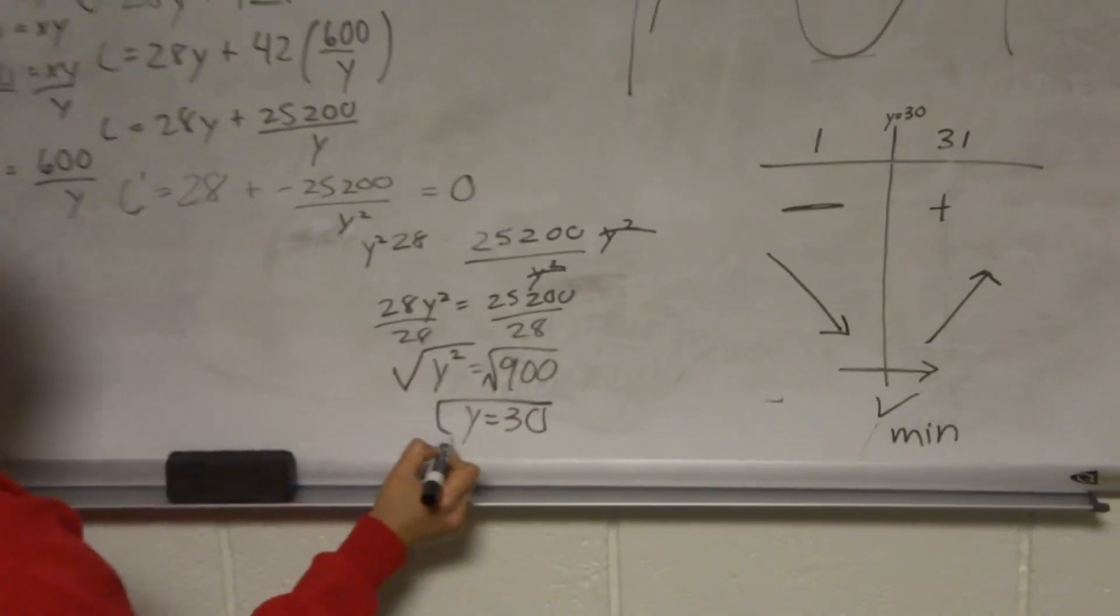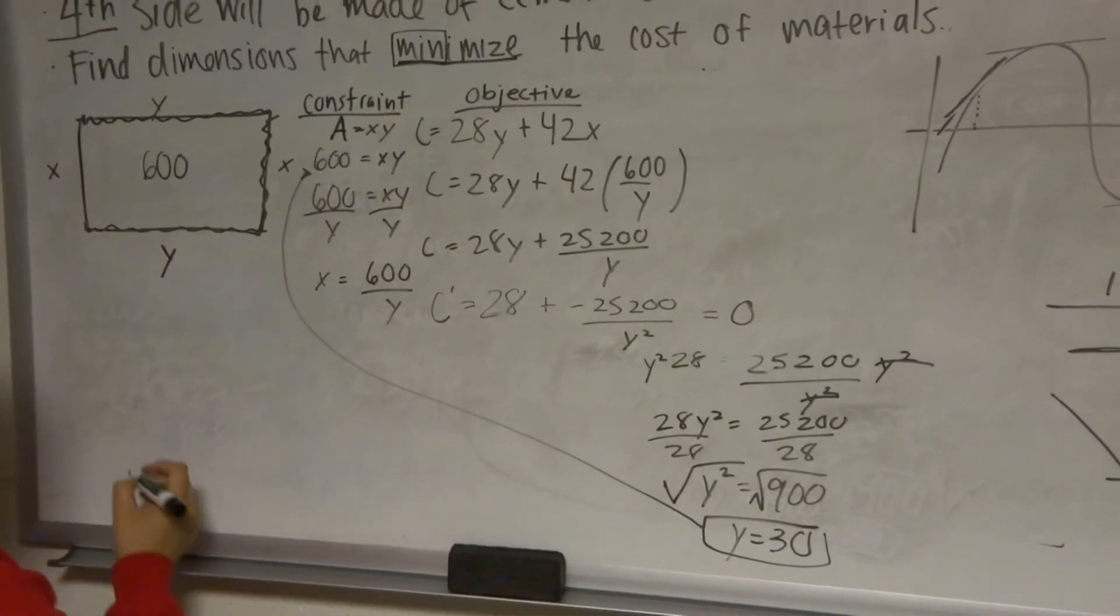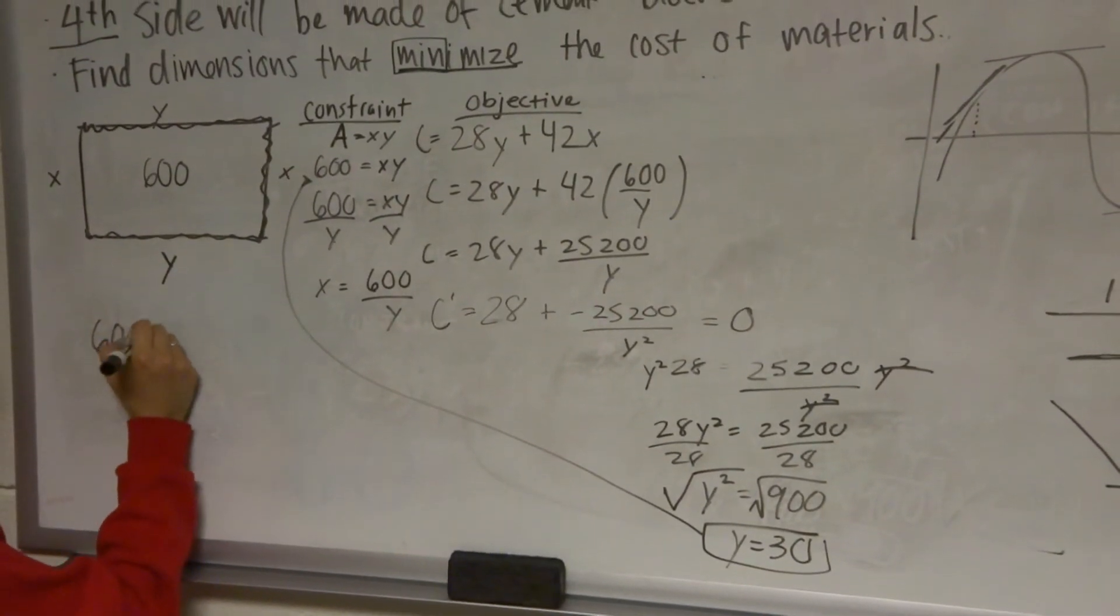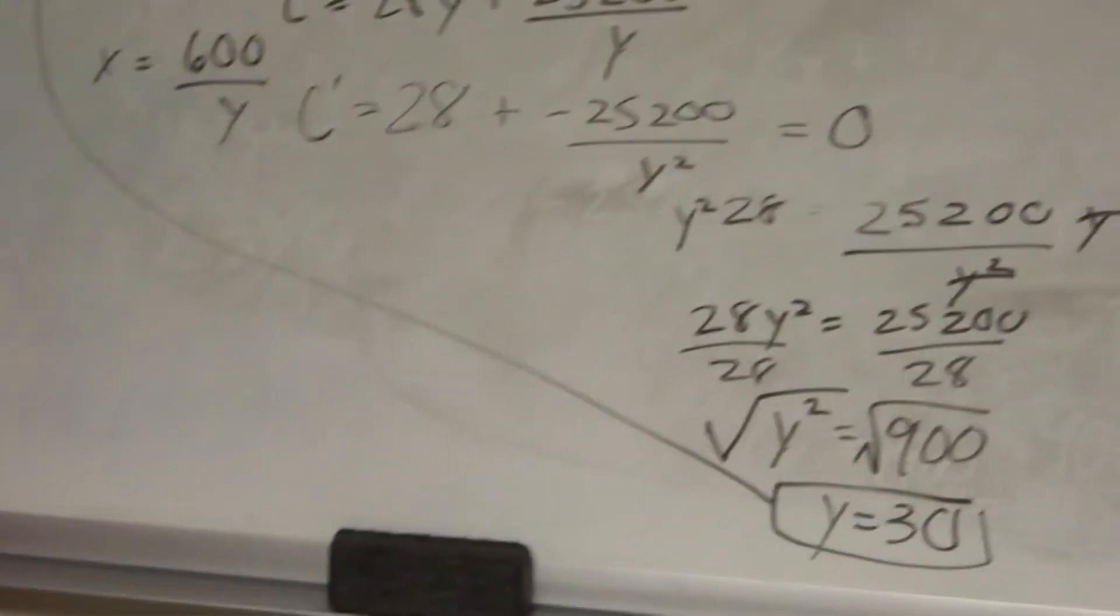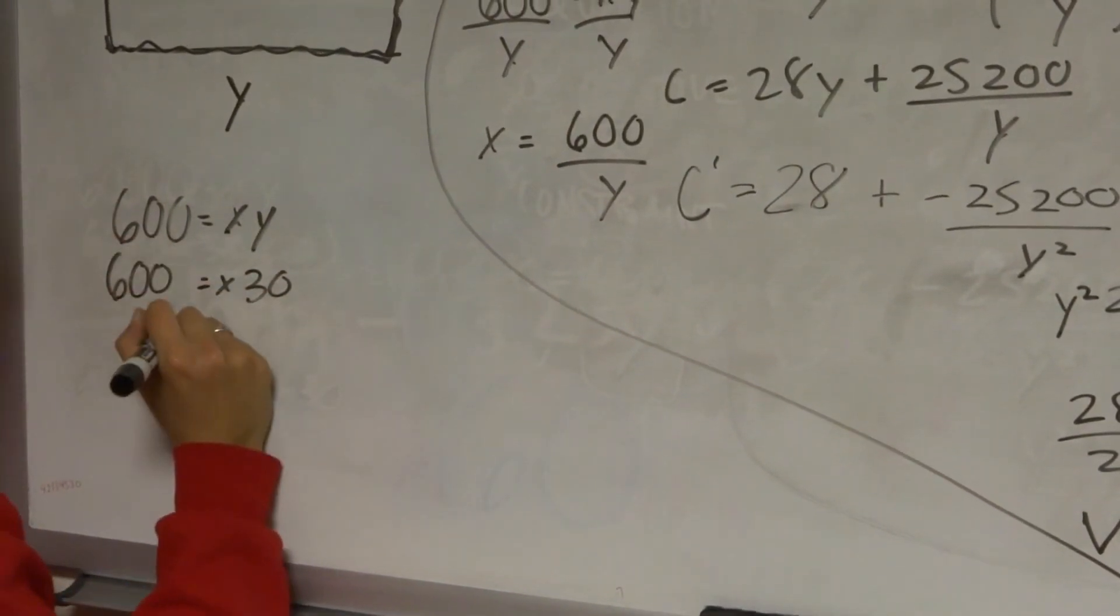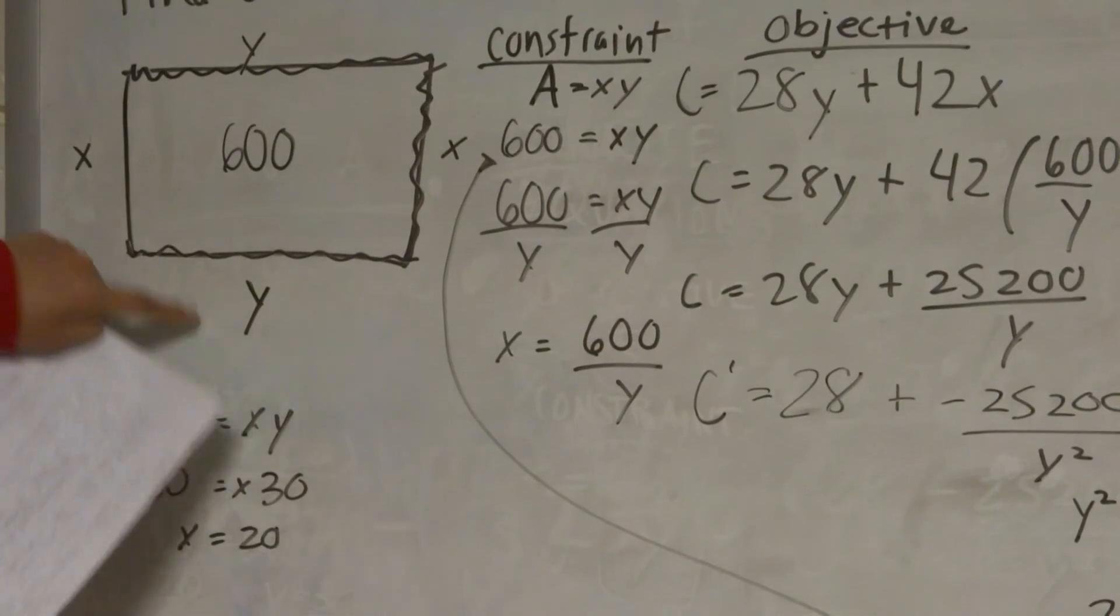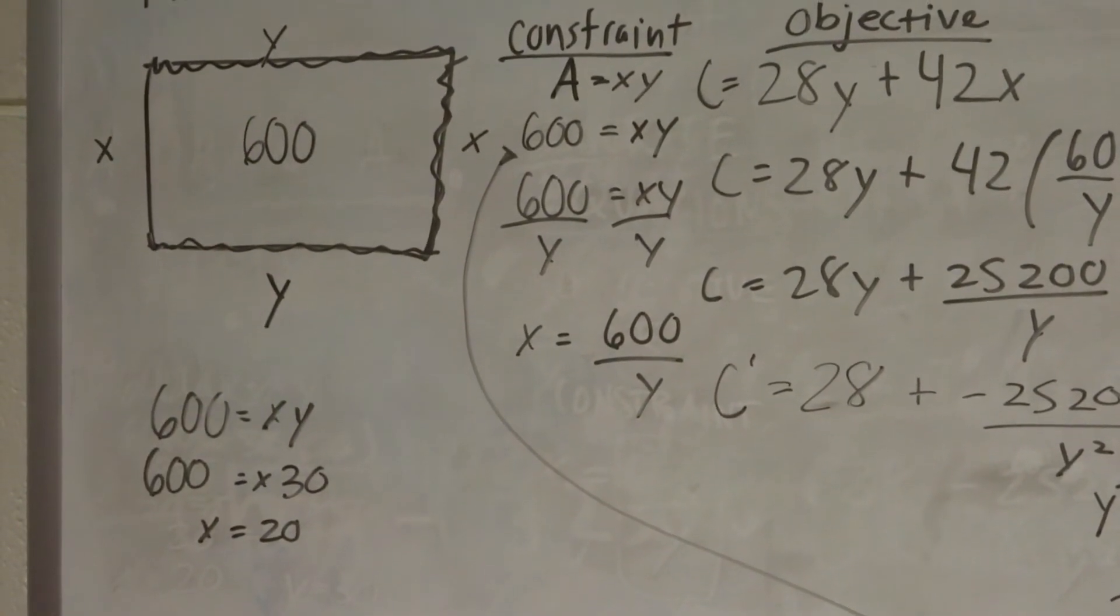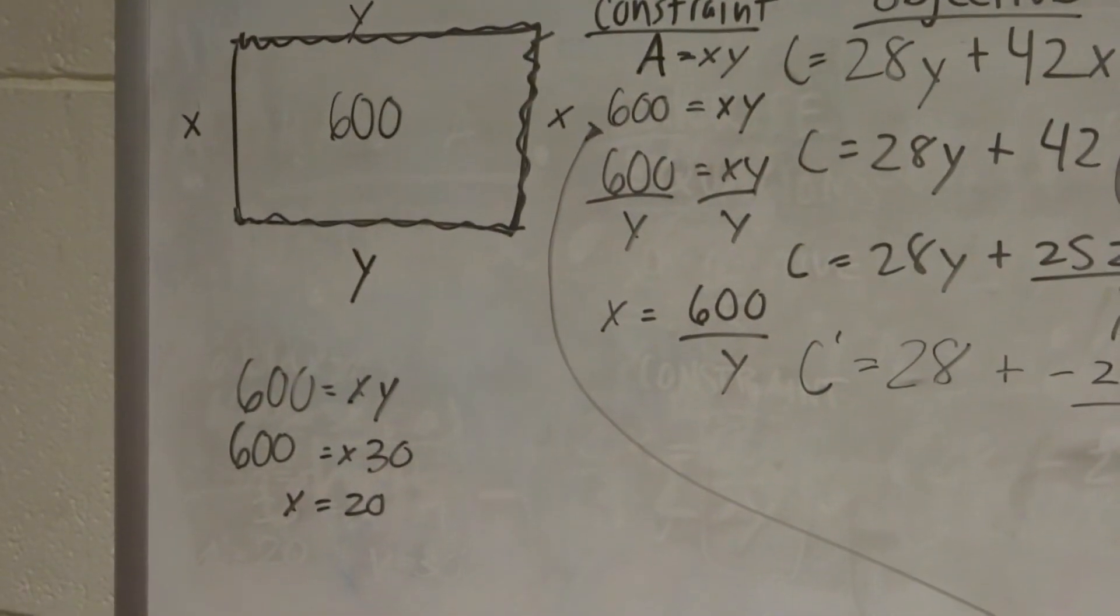So now we can use this y and plug it back into the area or the constraint equation to figure out what x is. So we already know this, so we can just plug in this new y right here. And we get that x equals 20. So when x equals 20 and y equals 30, the area is 600 and the cost of the materials is the smallest that it will be if the area equals 600. So we solved the optimization. Yay. Good luck on your exam.